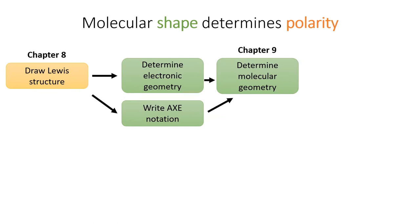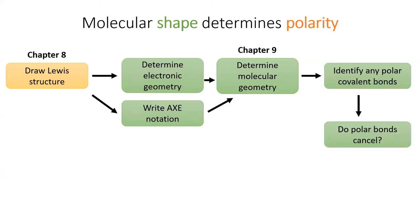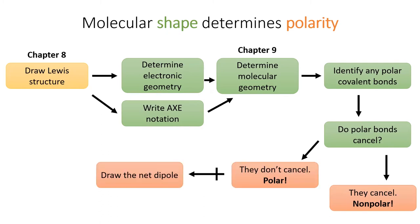Then, in the first part of Chapter 9, we'll learn how to use the Lewis structure to determine the molecular shape or geometry. Lastly, we'll identify any polar bonds. If the polar bonds cancel out, then the molecule is nonpolar. If they do not cancel out, then the molecule is polar, and we can draw a net dipole over the molecule.